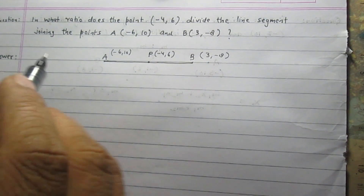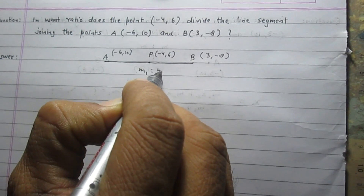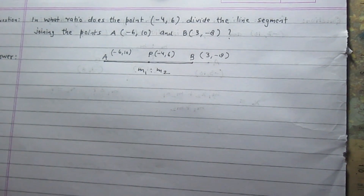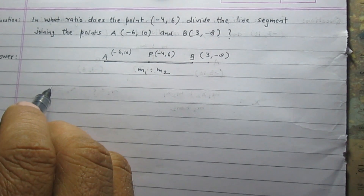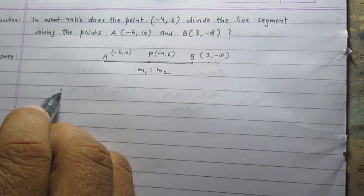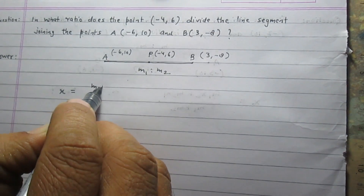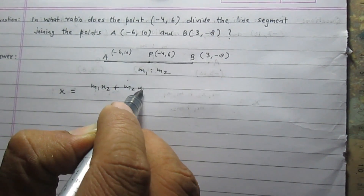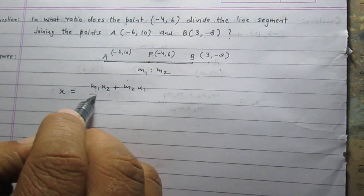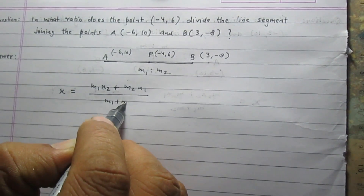Let us consider the ratio is M1 to M2. This ratio can be calculated using the section formula. According to the section formula, x is equal to M1 times x2 plus M2 times x1, whole divided by M1 plus M2.